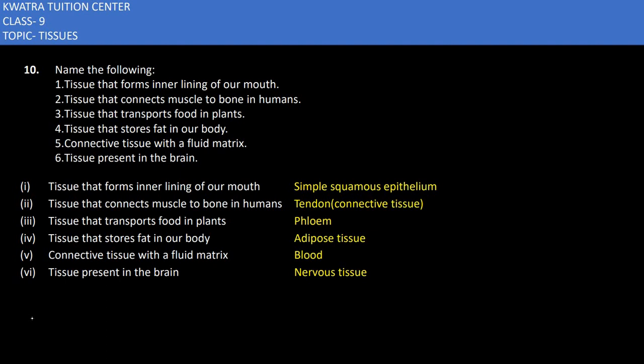So I am with the tenth part here. It says name the following: tissue that forms inner lining of our mouth. Which tissue is called inner lining of our mouth? It is nothing but simple squamous epithelium.